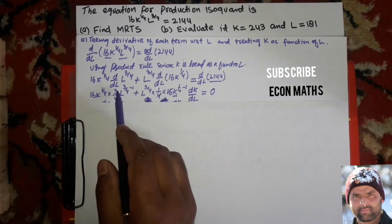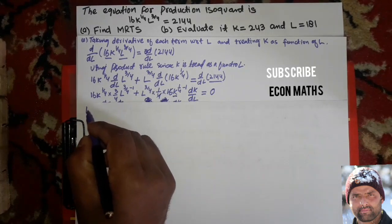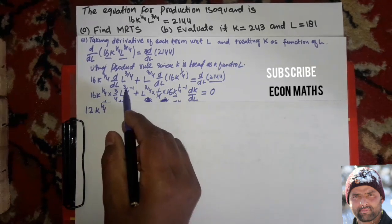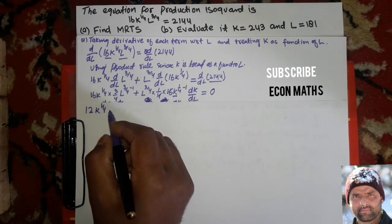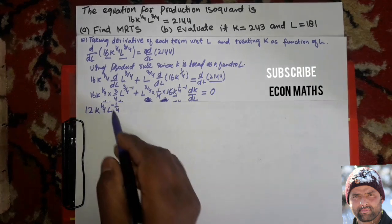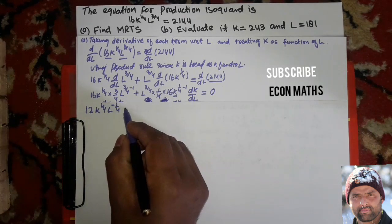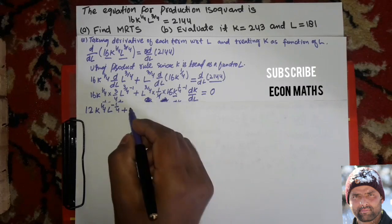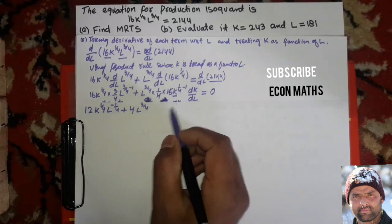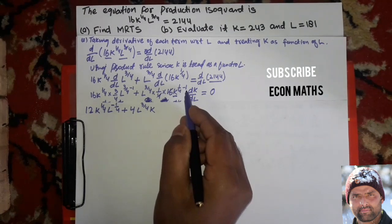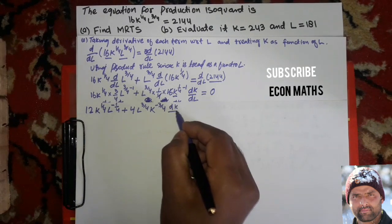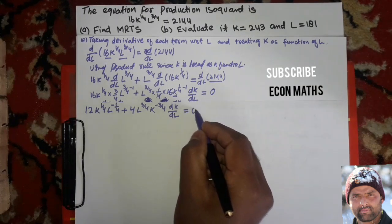So we have 12 times k to the power 1/4, and 3/4 minus 1 gives minus 1/4, so L to the power minus 1/4. Plus, 4 times 16 gives the coefficient — L to the power 3/4 — and 1/4 times 16 k to the power 1/4 minus 1 gives k to the power minus 3/4, times dk/dL, equals 0.